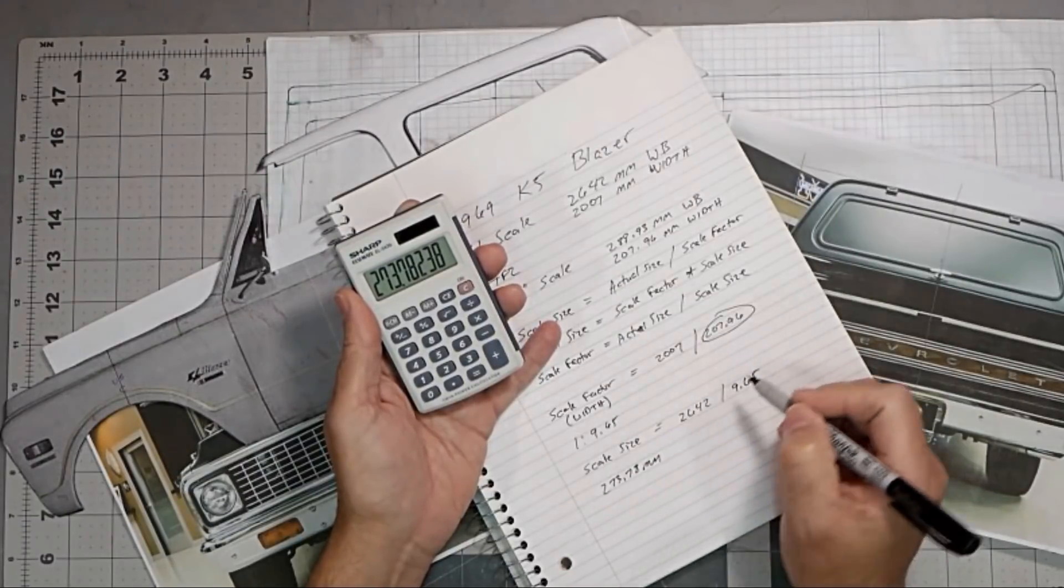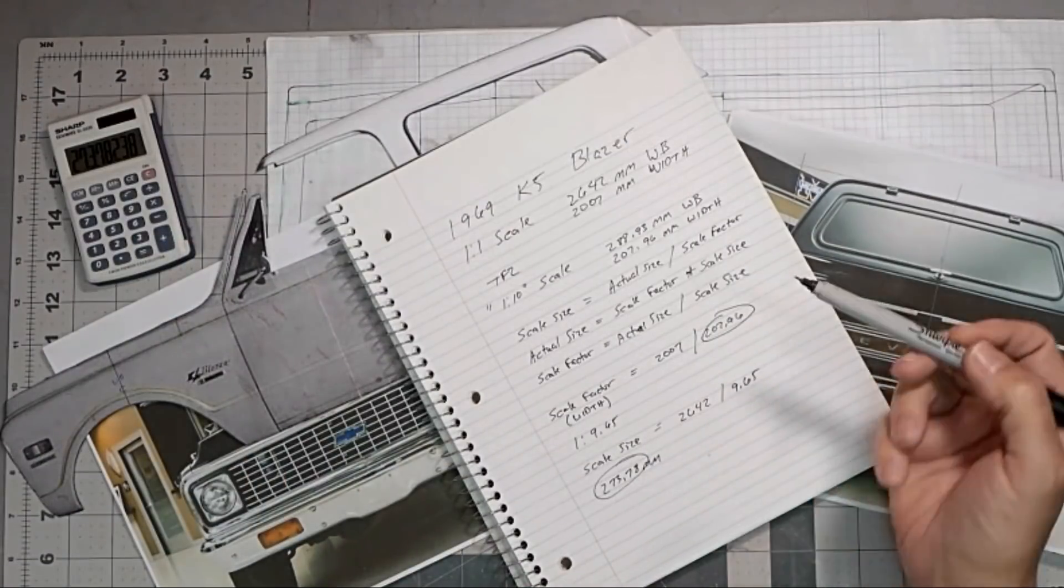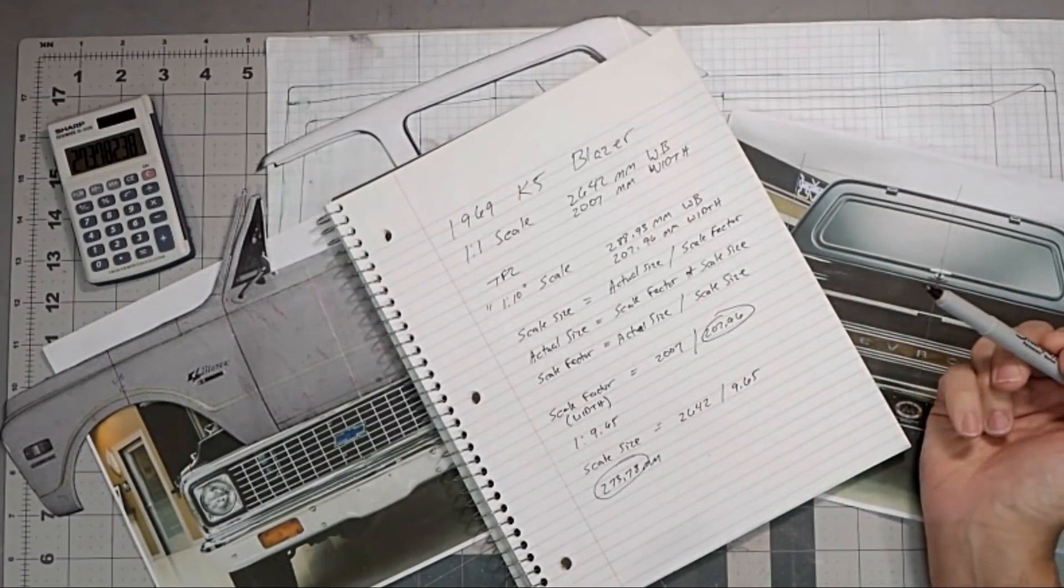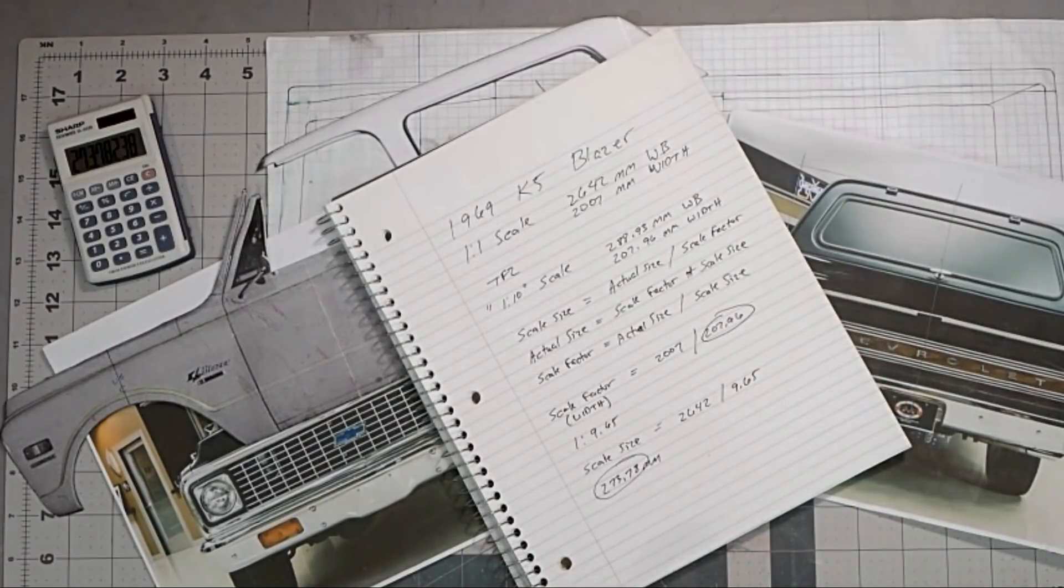273.78 millimeters is going to be your wheelbase. And so now we know that this is a fixed 273.78 wheelbase to a 207.96 width. And so that's essentially what you need to do to come up with how you'd want to scale the truck down.